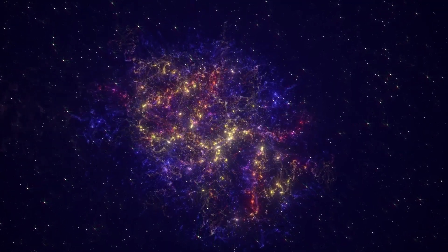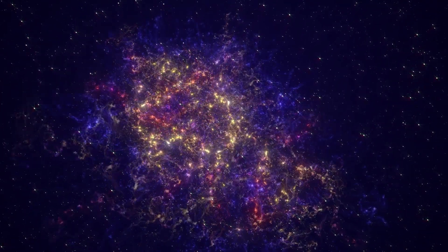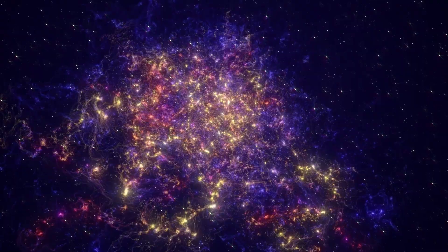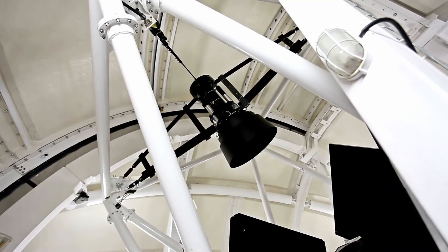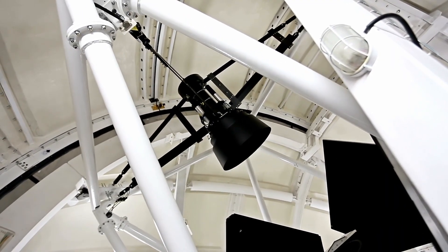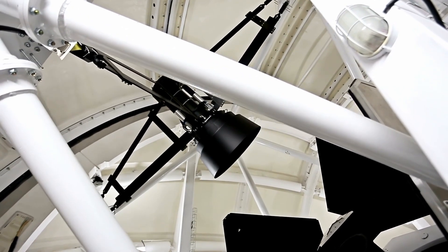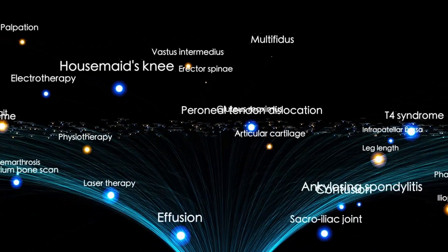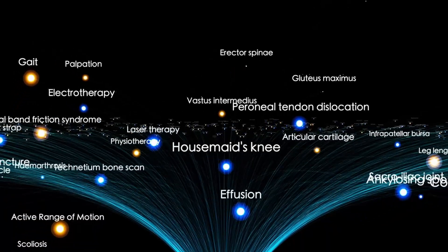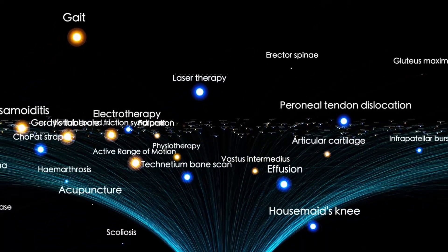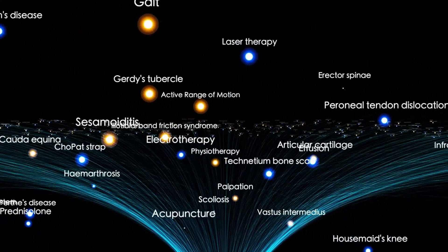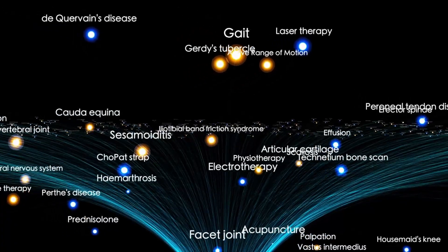The energy released during this process was tremendous. Webb's instruments detected gamma-ray bursts, X-ray emissions, and intense magnetic field fluctuations. The electromagnetic pulse from the merger temporarily disrupted satellite communications across Earth's near-space environment. Yet despite this enormous energy output, both objects remained structurally intact throughout the transformation.